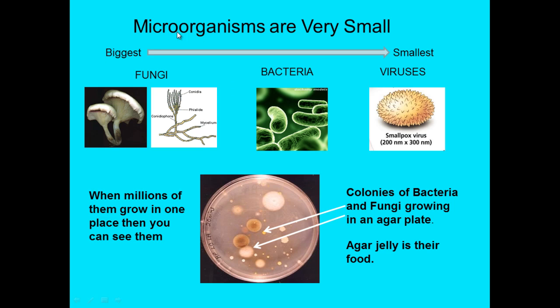You can see in this diagram that of the three types, the largest is fungi, the next largest is bacteria, and the smallest are viruses. The measurements shown correspond to nanometers. If we divide a meter into millimeters, then micrometers, then nanometers, a nanometer is a meter divided into a billion parts. For example, a smallpox virus is about 200 nanometers long or wide, making it particularly small.